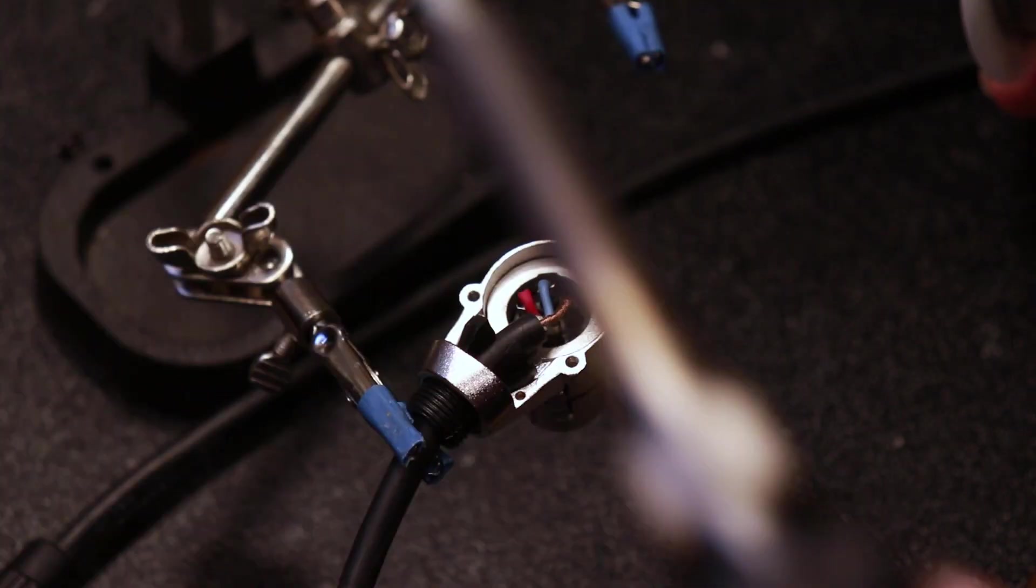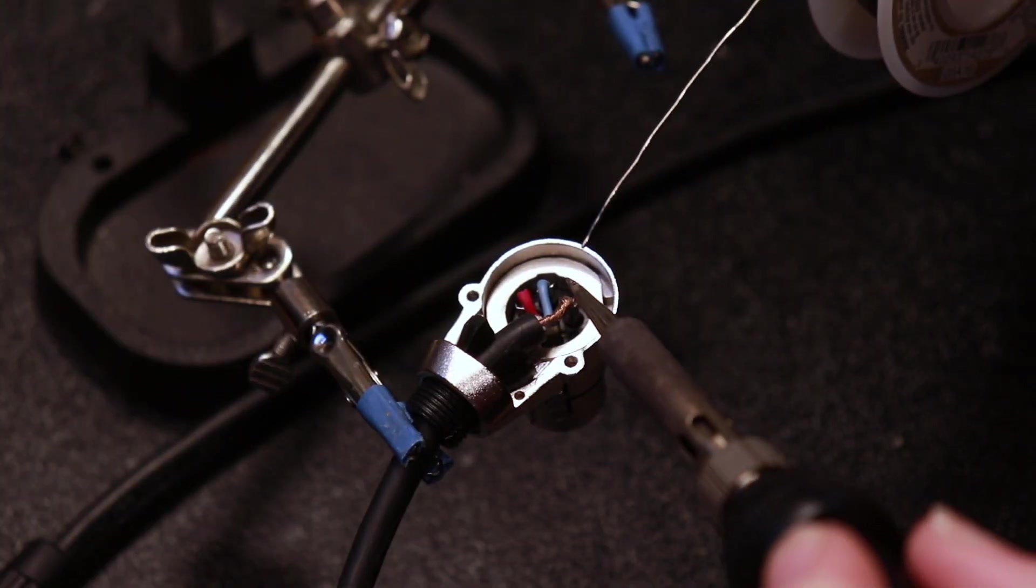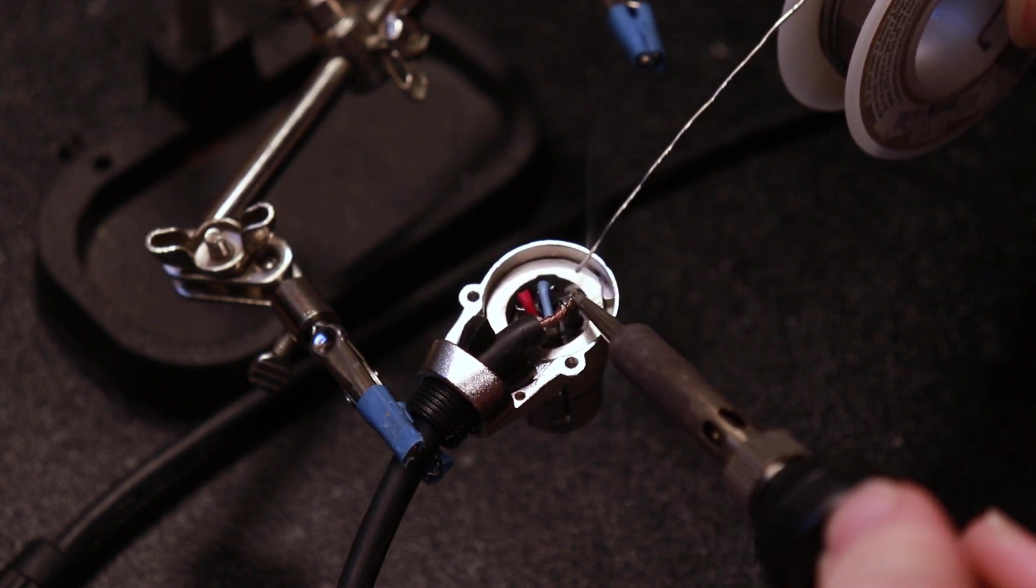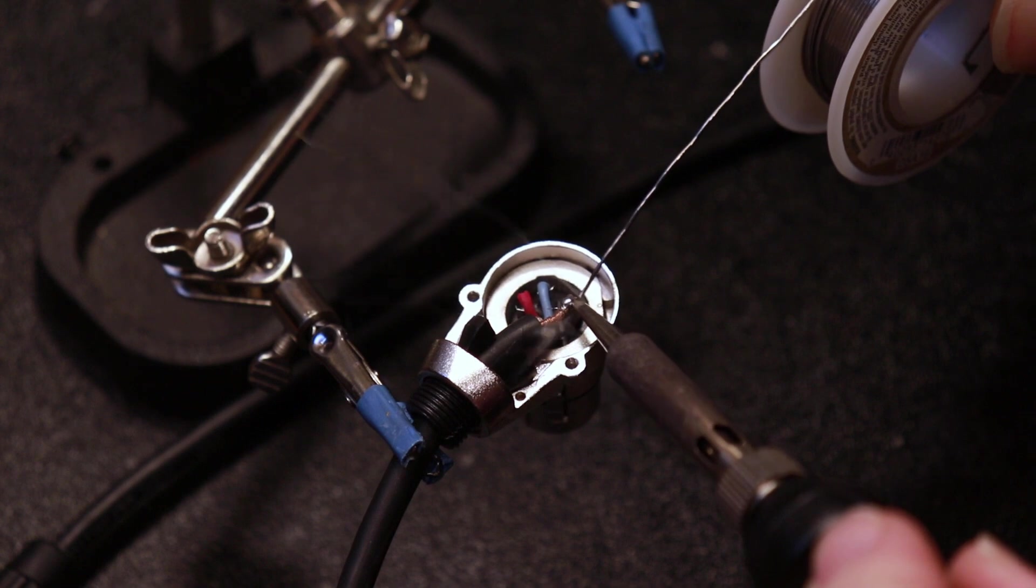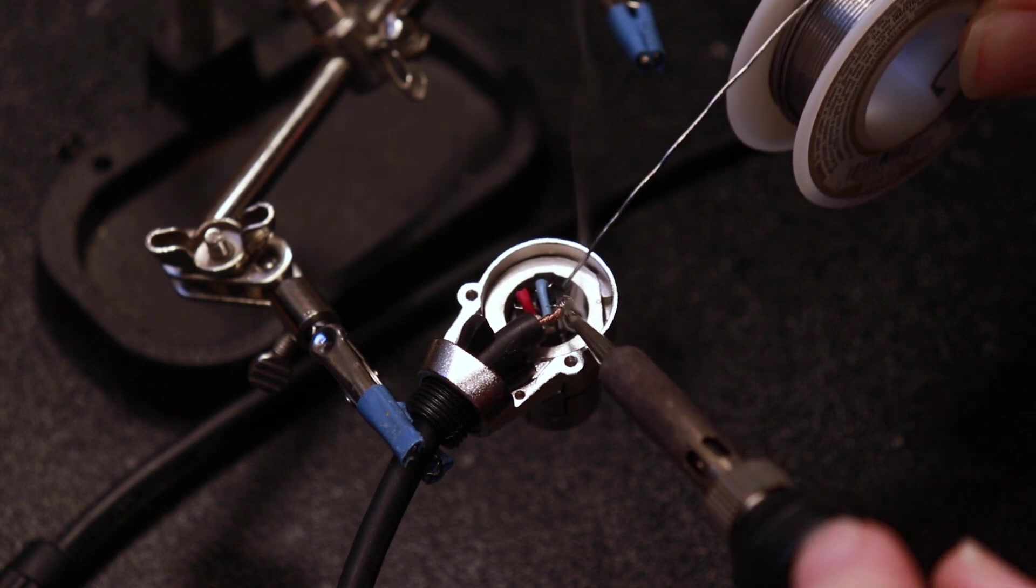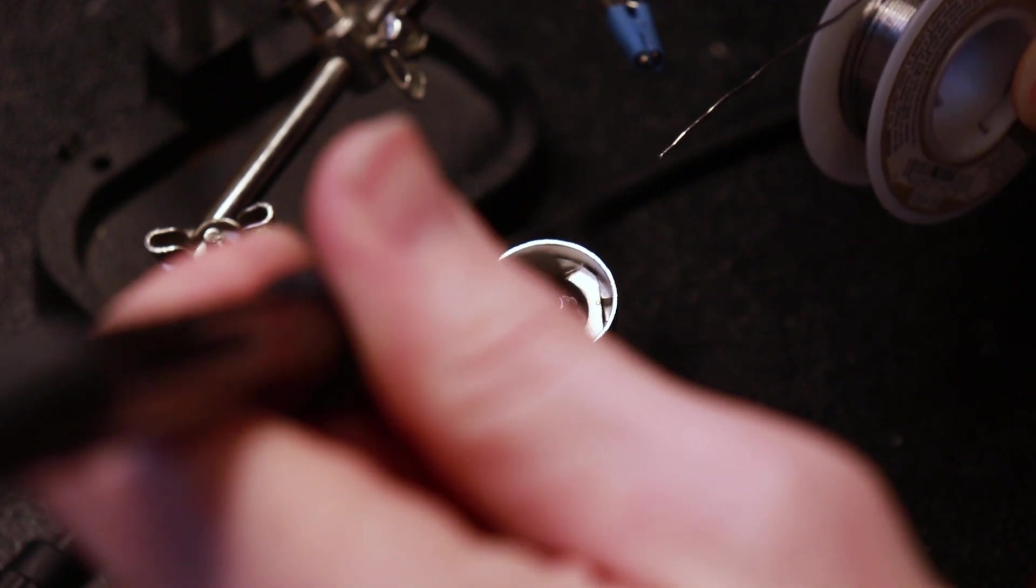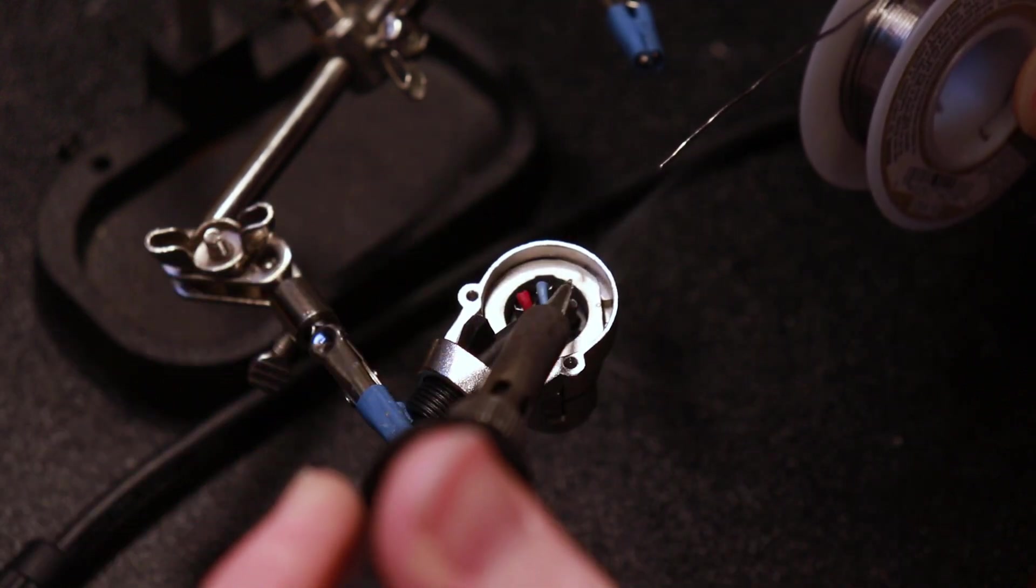And then once everything is all packed into the connector, I like to go ahead and flow more solder around the shield wire just because it likes to fray and I don't want any rogue wires sticking out anywhere. So we can just kind of melt that all in there and they won't go anywhere.